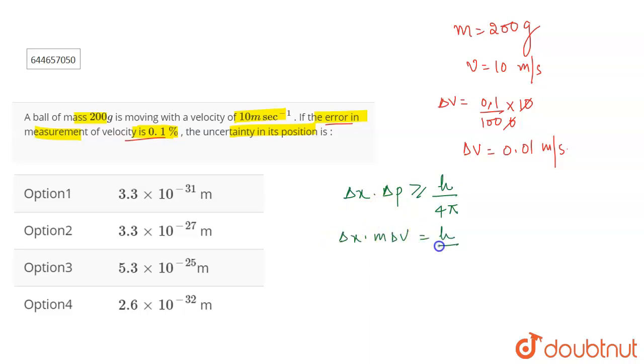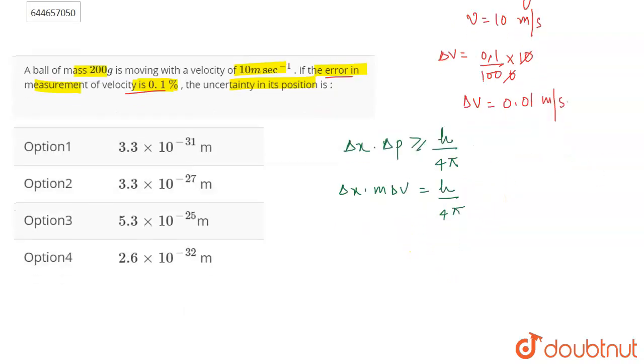will be equal to h upon 4 pi. Now for calculations we are considering it as equal, right. Now this will become - you have to calculate delta x, so this will be equal to h upon 4 pi m delta v, right. So delta x will be equal to - what is the value for h?